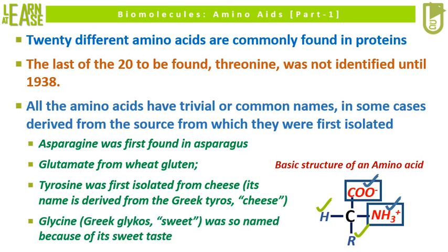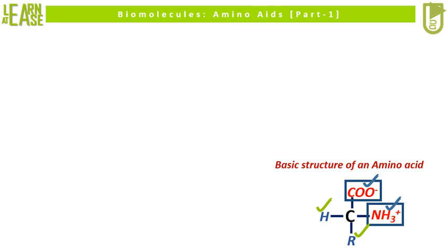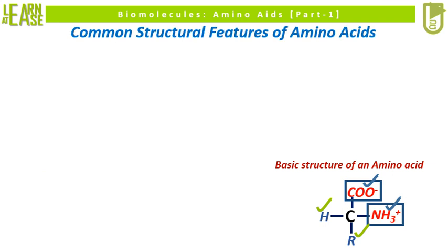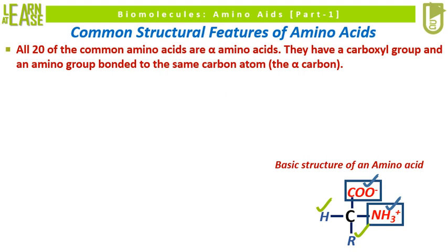Glycine is derived from the Greek word 'glycos,' which means sweet, so the amino acid was named glycine because of its sweet taste. Now I will explain the common structural features of amino acids. All 20 of the common amino acids are alpha amino acids.